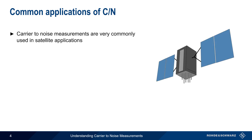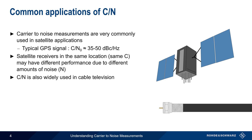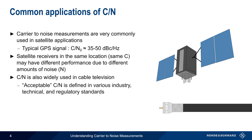One of the most common areas where carrier-to-noise ratio is used is in satellite applications. For example, a typical received GPS signal will have a carrier-to-noise density ratio of somewhere between about 35 and 50 dBc per hertz. Note that satellite receivers in the same location will see approximately the same carrier strength, but may have widely differing carrier-to-noise ratios due to different amounts of received or internally generated noise. Another area where carrier-to-noise ratio is often used is in the cable television industry. Various cable TV standards and technical recommendations explicitly specify an acceptable carrier-to-noise ratio, although this number will change based on factors such as the channel bandwidth and the modulation type.